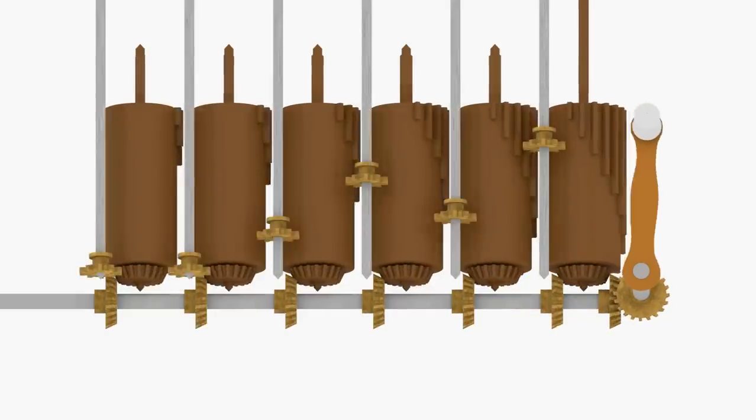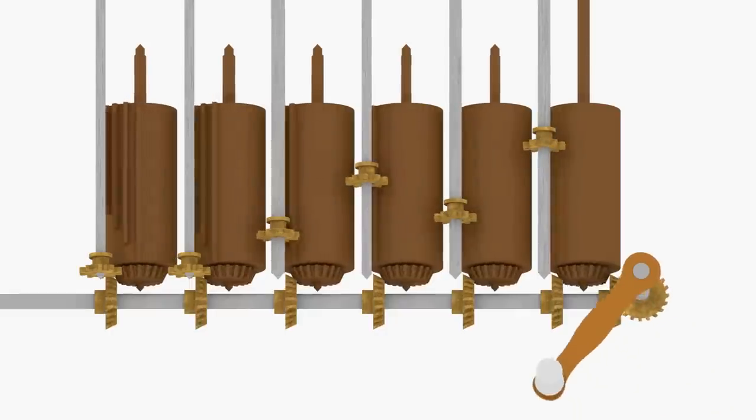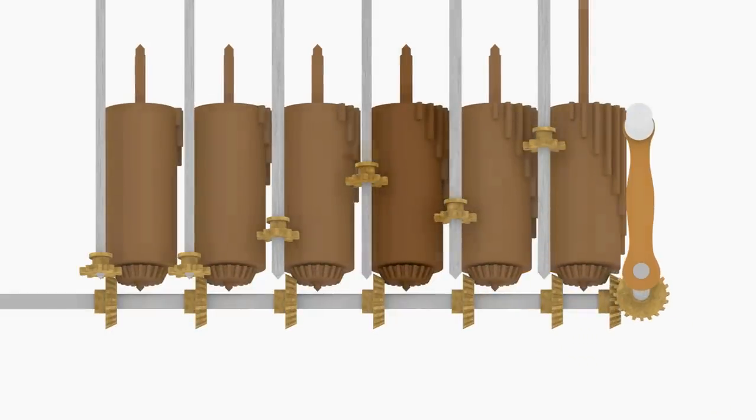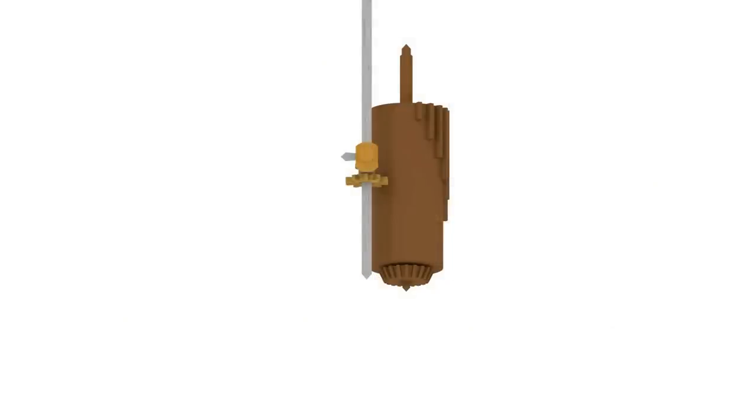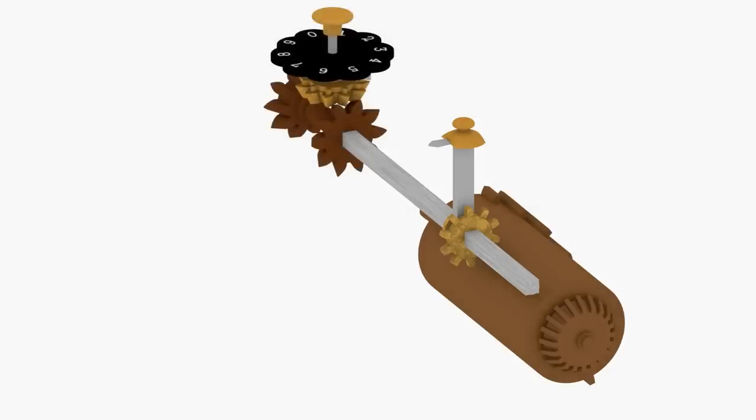The cogs mesh with a 10-toothed conductor gear that slides along a square shaft. The position of the conductor gear is set by an input slider. An accumulator dial is linked to the square shaft by a bevel gear.